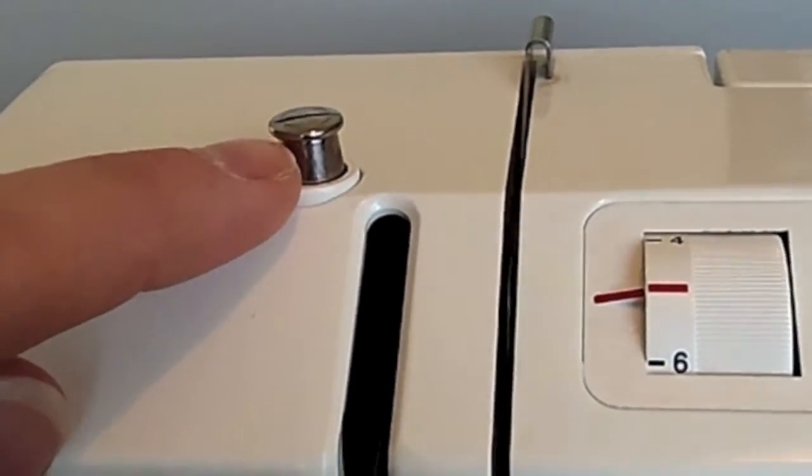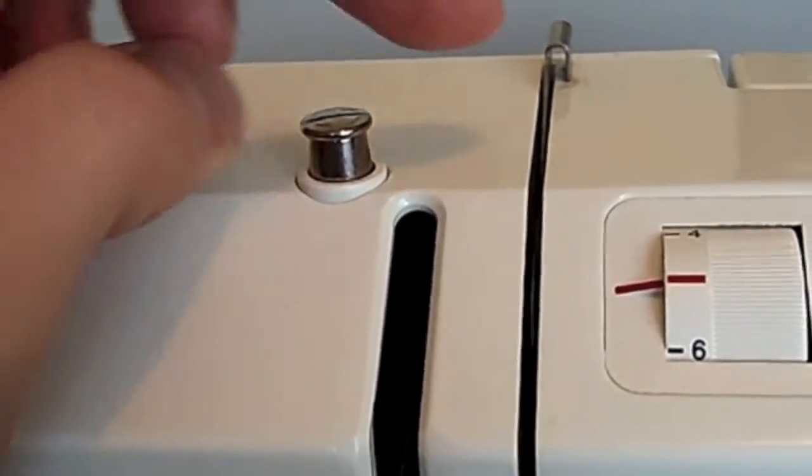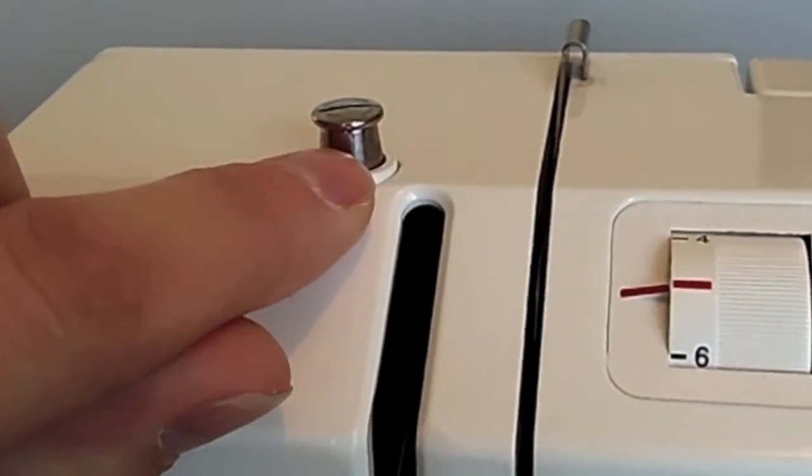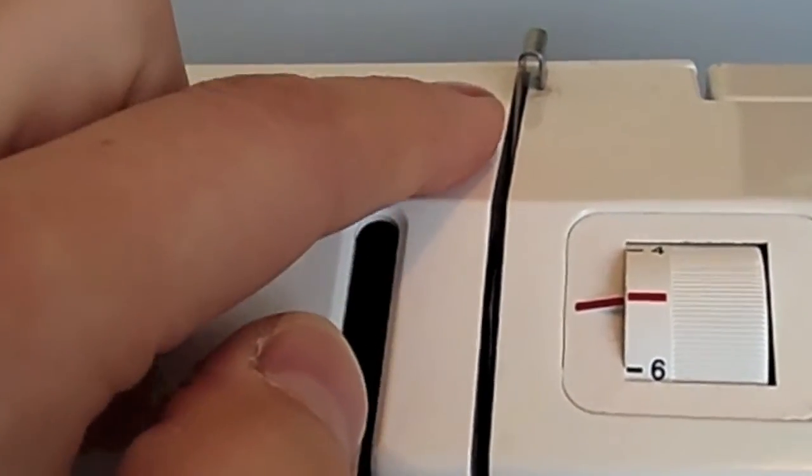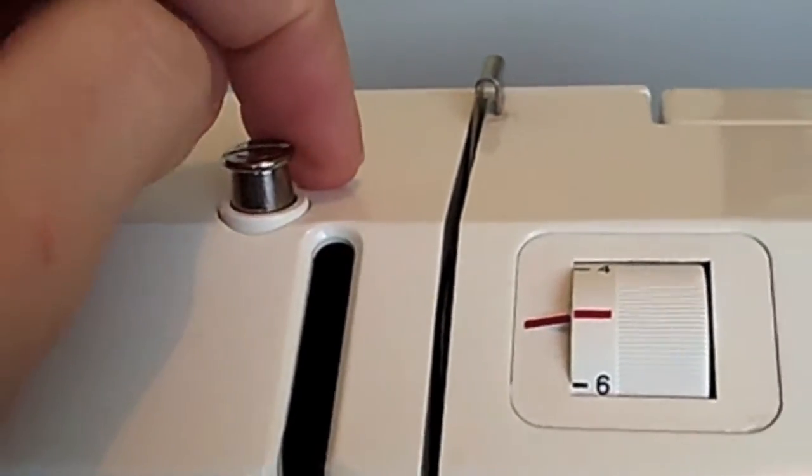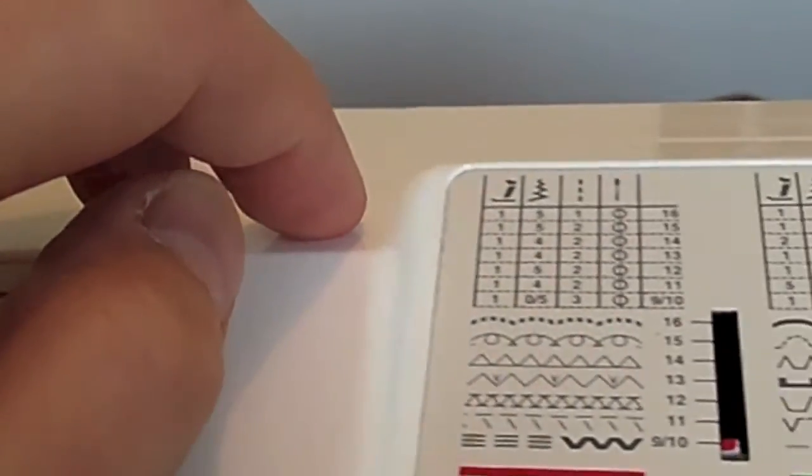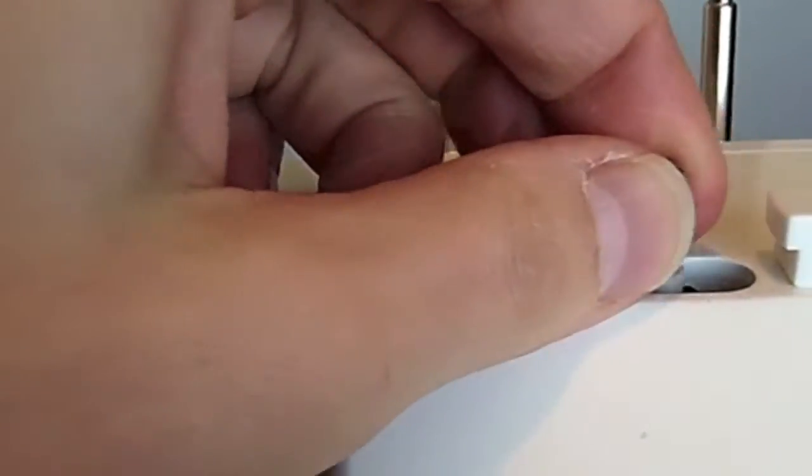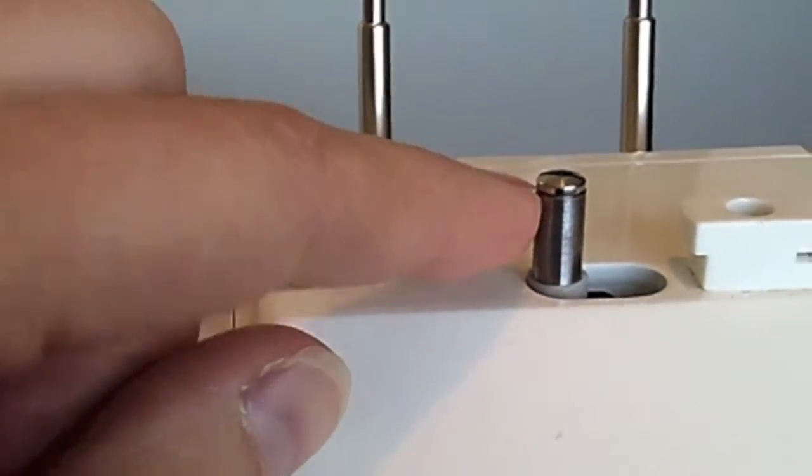So this one's for if you're putting thread onto a bobbin. You'd bring your thread around your thread guide, or in this particular machine it says to put the thread around the thread guide clockwise. So you might just need to check your manual to see how yours needs to be done.